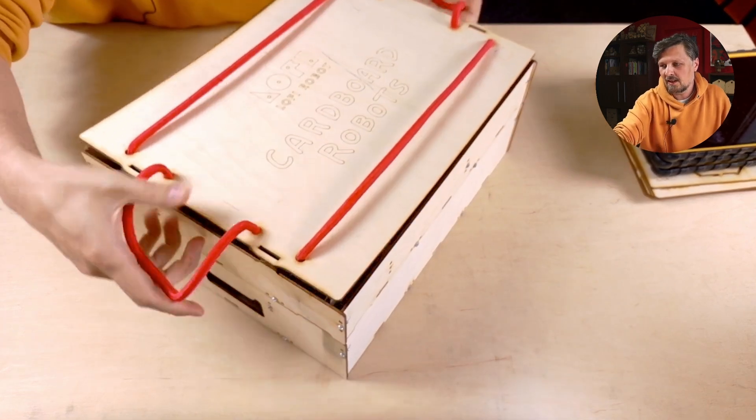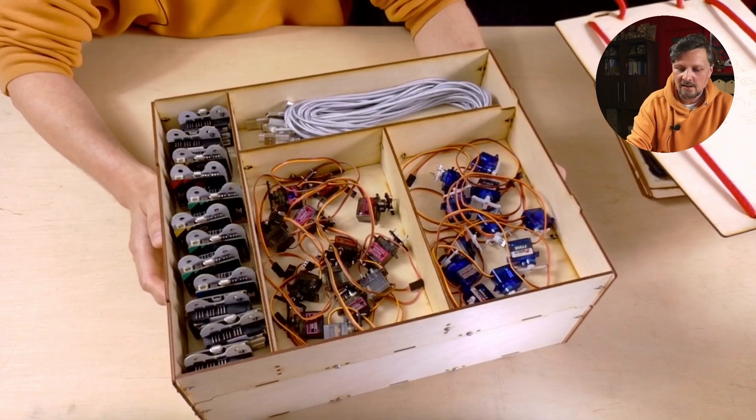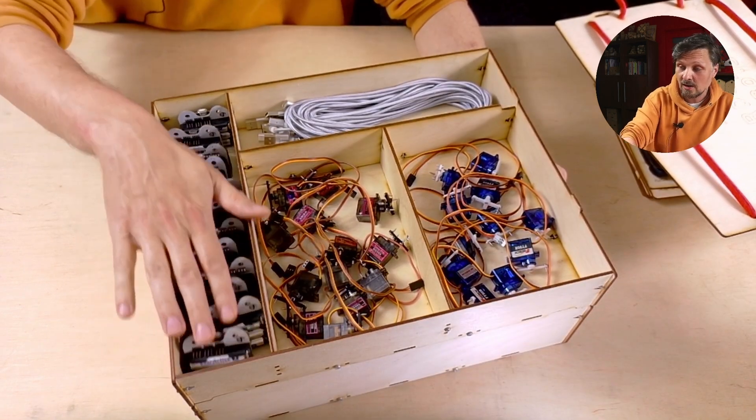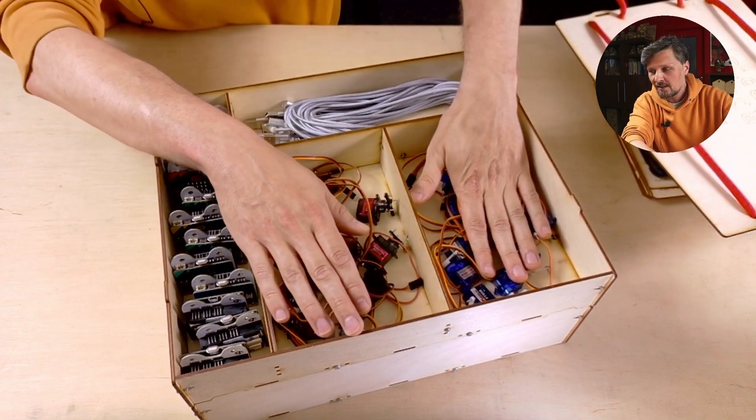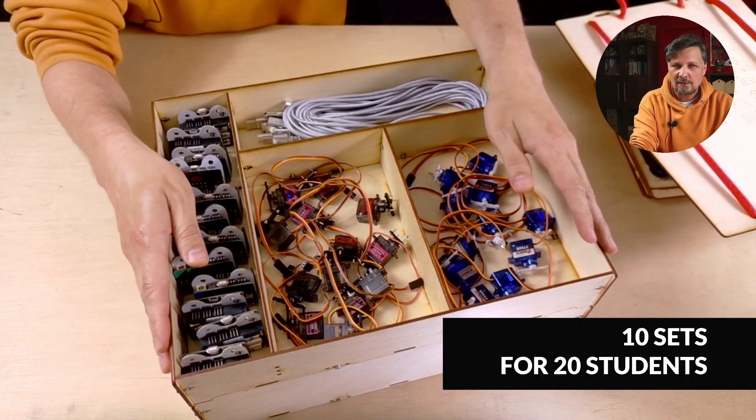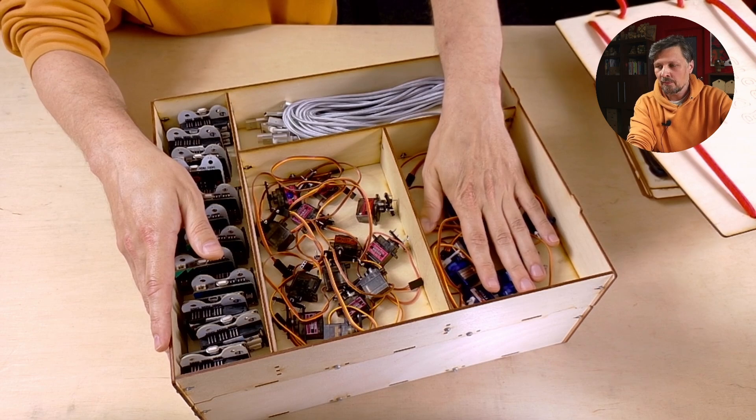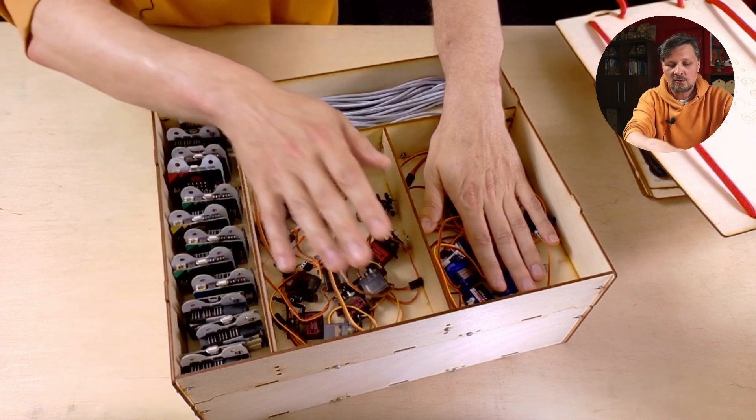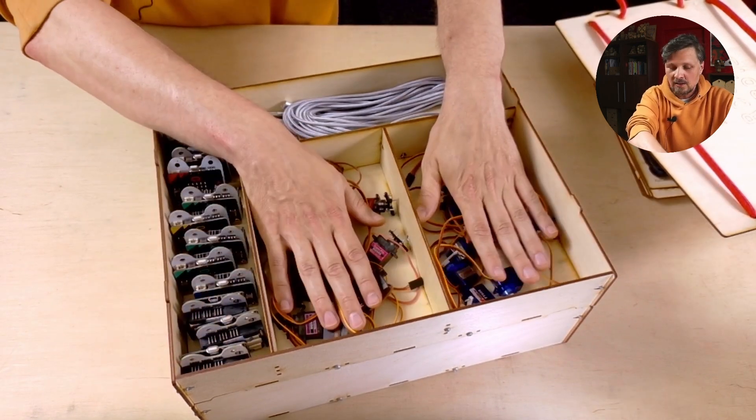You can remove the lid like this, and here you have the first floor with compartments for micro bits, 180 servos, 360 servos, and USB cables. The box is designed for 10 kids, so you would need like two 360 and two 180 servos for each micro bit, so 20 of these and 20 of these.